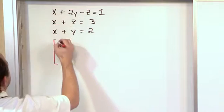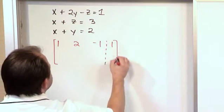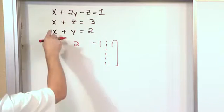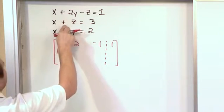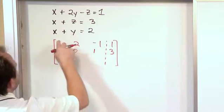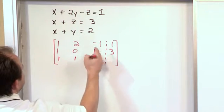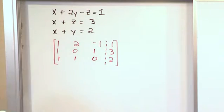Here's our augmented matrix. We have 1, 2, negative 1, 1. And then we have 1 for x, nothing for y in here, so we have to put a 0. We have a 1 for a z, and then we have a 3 over here. 1 for x, 1 for y, nothing for z, so we have to put a 0, and then we have a 2. So this is my augmented set of equations.